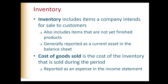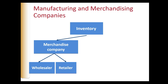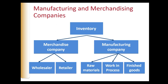Cost of goods sold is also referred to as cost of merchandise sold or cost of products sold. Merchandising companies purchase inventory that are primarily in finished form for resale to customers. We can broadly classify merchandising companies as wholesalers or retailers. Wholesalers resell inventory to retail companies or to professional users. Retailers purchase inventory from manufacturers or wholesalers and then sell this inventory to end users.